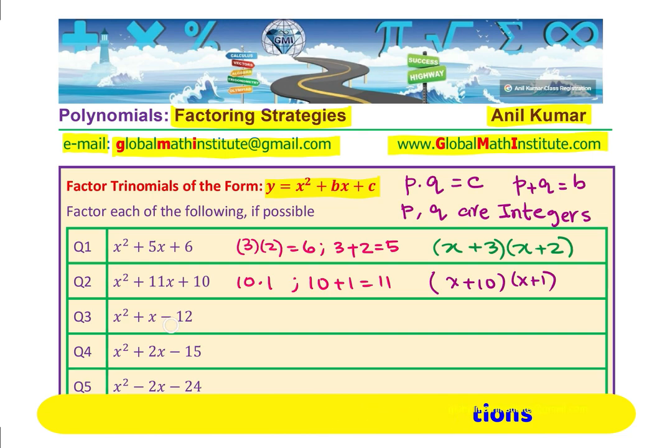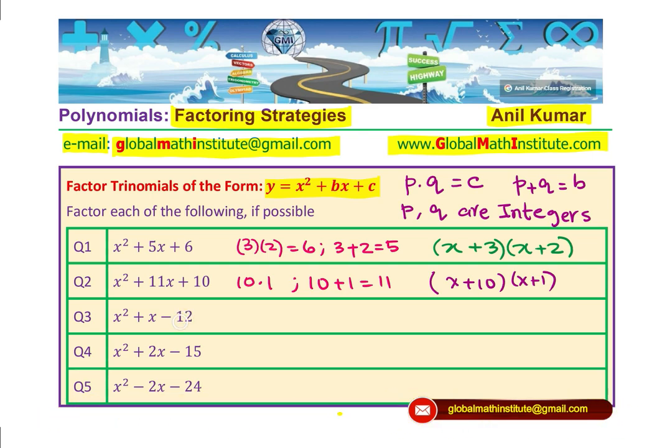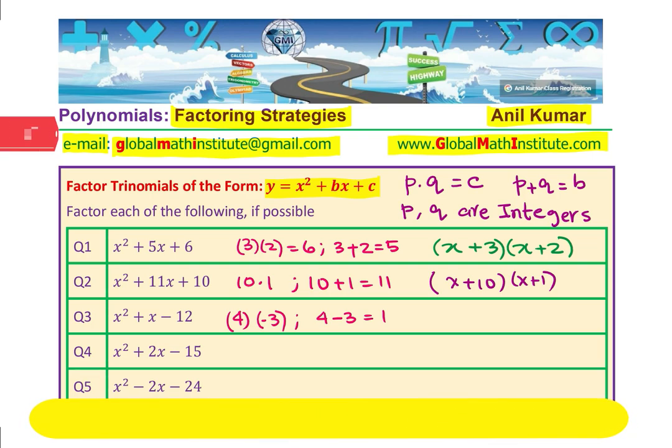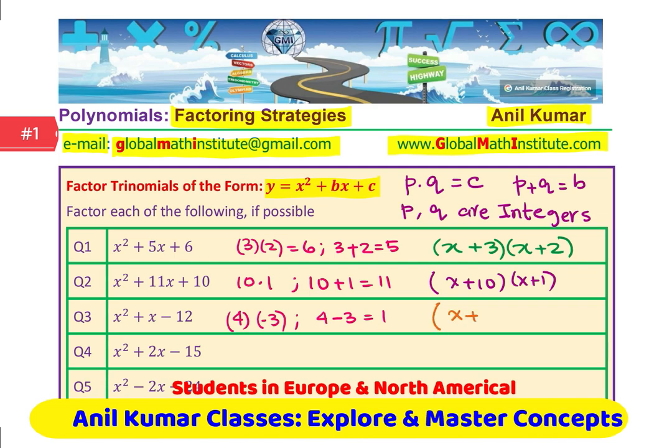Next one, we need product of minus 12. That means one number is going to be positive, one negative and we want sum being positive. That means bigger number is positive. Bigger number is positive, we will take 4 times 3 but 3 should be negative since we want negative 12. 4 minus 3 is equal to 1. We could now write down this factored form as x plus 4 times x minus 3.